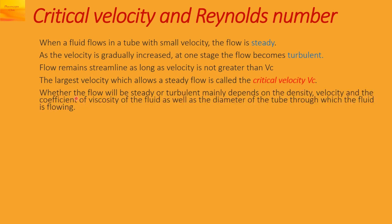Whether the flow will be steady or turbulent depends on the density, velocity, and the coefficient of viscosity of the fluid, as well as the diameter of the tube through which the fluid is flowing. So we can write that Vc, the critical velocity, is proportional to the coefficient of viscosity of the fluid divided by rho times r, where rho is the density of the liquid and r is the radius of the tube.